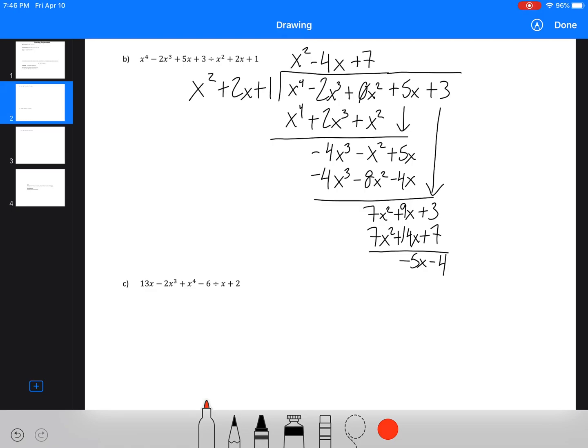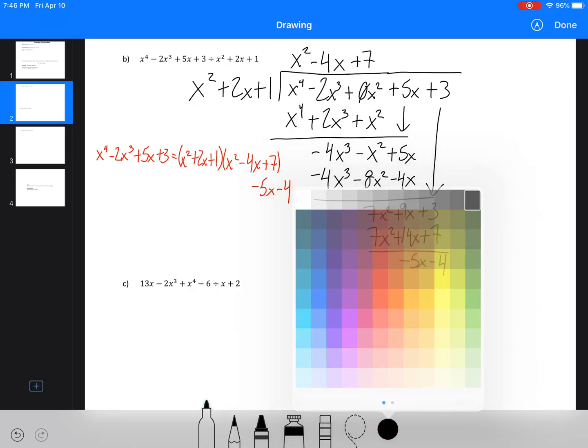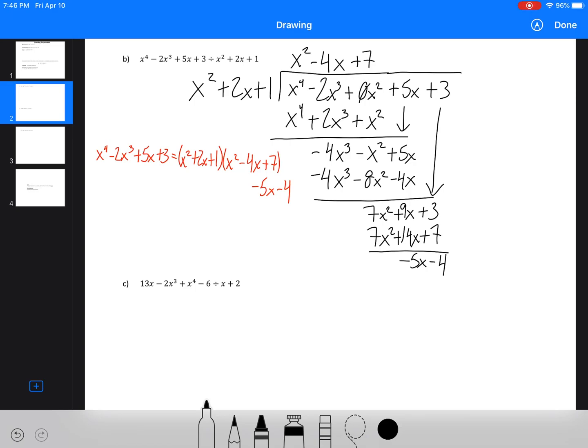I'm not going to write out the division. Why not? I'll write out one more division statement. I'm not going to write out any more after this. But you would have x⁴ - 2x³ + 5x + 3 = (x² + 2x + 1)(x² - 4x + 7) - 5x - 4.